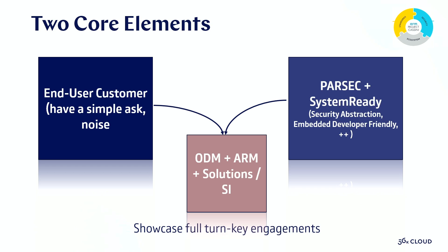One element is Parsec — the idea of abstracting the implementation of various different secure elements and making it more accessible for developers to build secure applications. It's not about trusted applications in OP-TEE directly, it's more about layering on top of that. We're an integrator, that's what 56k Cloud does — bringing all these building blocks together, trying to build a decent developer experience and come to a maintainable solution with the customer.